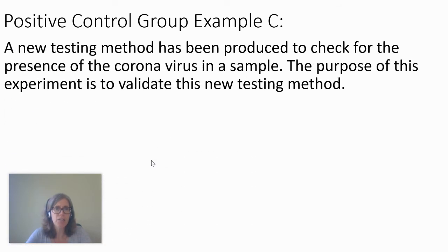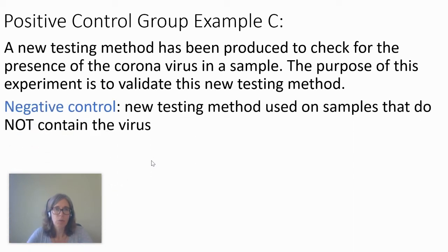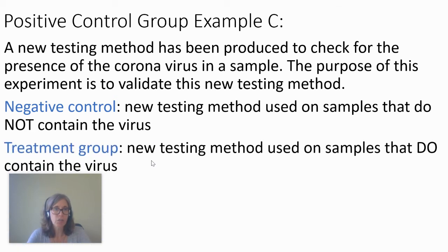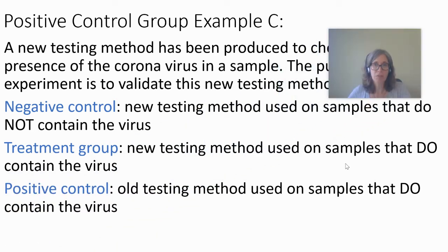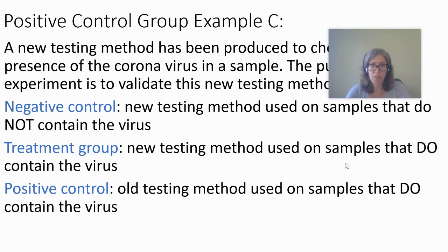Example C: a new testing method has been produced to check for the presence of coronavirus in a sample. The purpose of this experiment is to validate this new testing method. The negative control would be testing the method on samples that do not contain the virus. The treatment group would be testing the method on samples that do contain the virus. And the positive control would be testing samples that do contain the virus, but using the old method. So the question is: is this new method just as good or better than the old method?